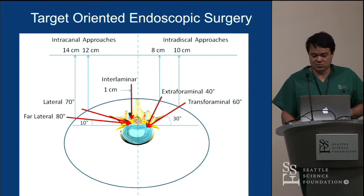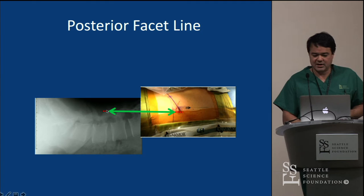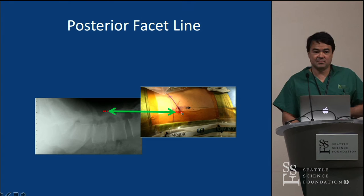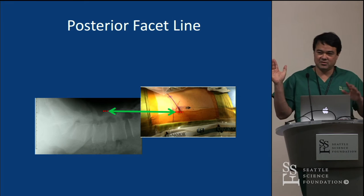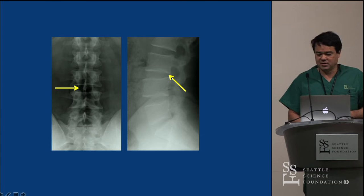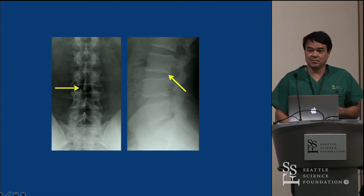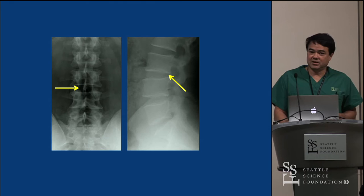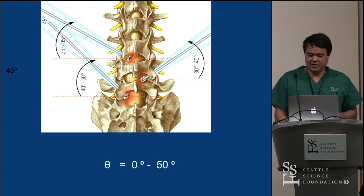A critical line is the posterior facet line. I draw this line because you never want your needle any more ventral than the posterior facet line — because you can enter the retroperitoneal contents and find your kidney, ureters, and blood vessels. Know your lines, know your anatomy. Draw your midline and your traverse line. For an extradiscal approach, dock your needle on the posterior disc space and don't go any more medial than the medial pedicular line, or you can be in the canal.